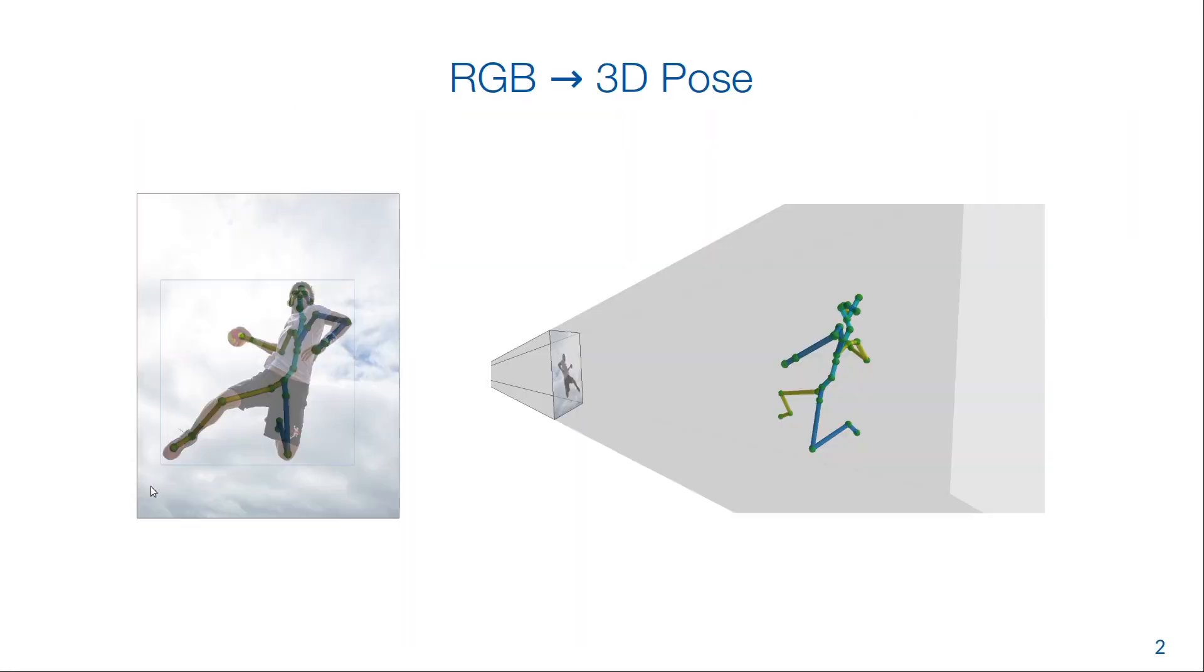In this work we tackle 3D human pose estimation from a single RGB image. A major challenge in this task has always been the difficulty of obtaining ground truth and therefore a lack of large-scale diverse training data.